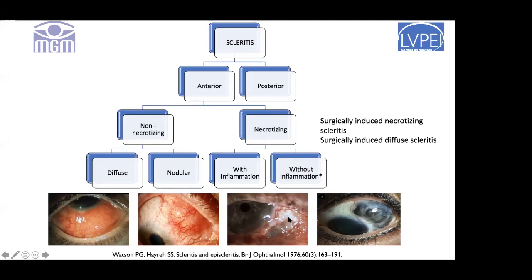Based on Watson's criteria, this case is necrotizing anterior scleritis with inflammation. This is nodular anterior scleritis, this is diffuse anterior scleritis, and this is scleromalacia perforans with ongoing inflammation. We have slightly modified the classification - there is also surgically induced necrotizing scleritis called SINS, and surgically induced diffuse scleritis also called SINS. These are entities recognized later and added to the classification.